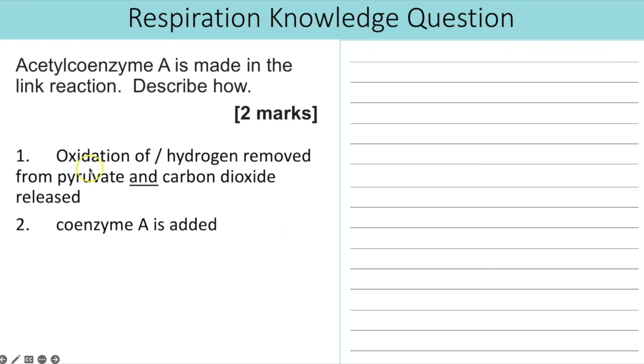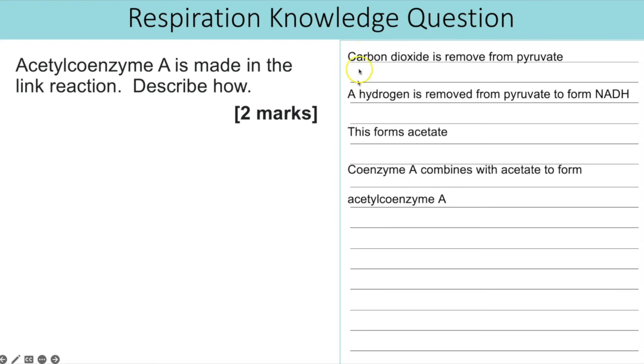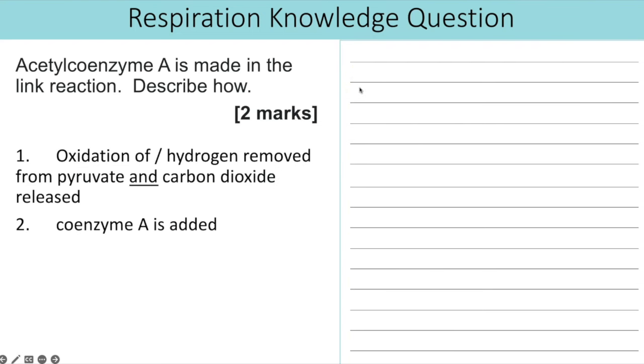And if we have a look then at the mark scheme, oxidation of or hydrogen removed from pyruvate and carbon dioxide is released. So that is our first mark. Those two statements were combined as one mark. There wasn't a mark for saying it forms acetate but there is a mark for talking about how the acetate combines with coenzyme A. Although you didn't even have to mention it's acetate. It's just coenzyme A is added.